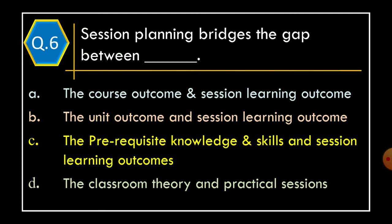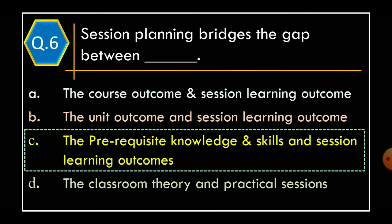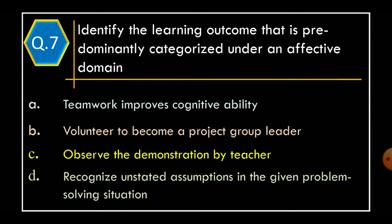Question 6: Session Planning bridges the gap between — Option A: The Course Outcomes and Session Learning Outcomes; Option B: The Unit Outcomes and Session Learning Outcomes; Option C: The Pre-Requisite Knowledge and Skills and Session Learning Outcomes; Option D: The Classroom Theory and Practical Sessions. The correct option is Option C: The Pre-Requisite Knowledge and Skills and Session Learning Outcomes.